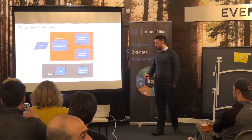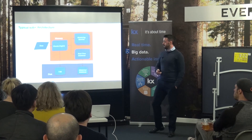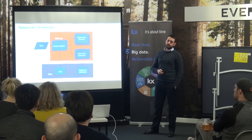This is a typical KDB+ architecture — not an end-all solution, just a reference to explain what's going on. Data comes in to an events engine, which we call a ticker plant. The first thing the ticker plant does is log everything to an on-disk log file, saved on fast-access memory so that if any subscriber — a streaming query or the real-time database — goes down, you can get full recovery and replication. The ticker plant's job is then to push data downstream.